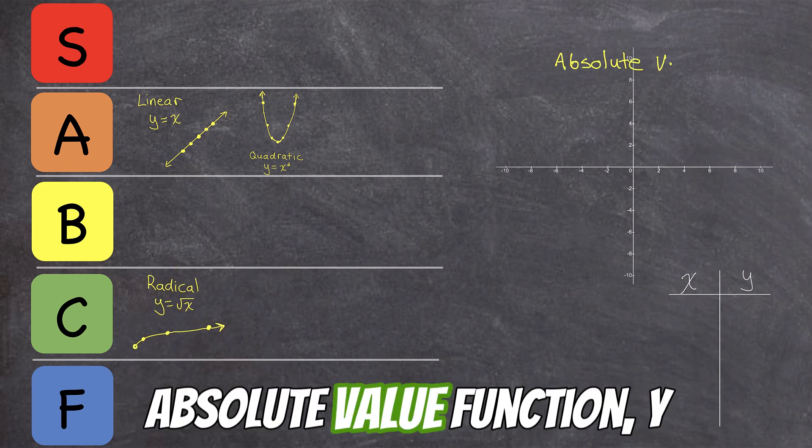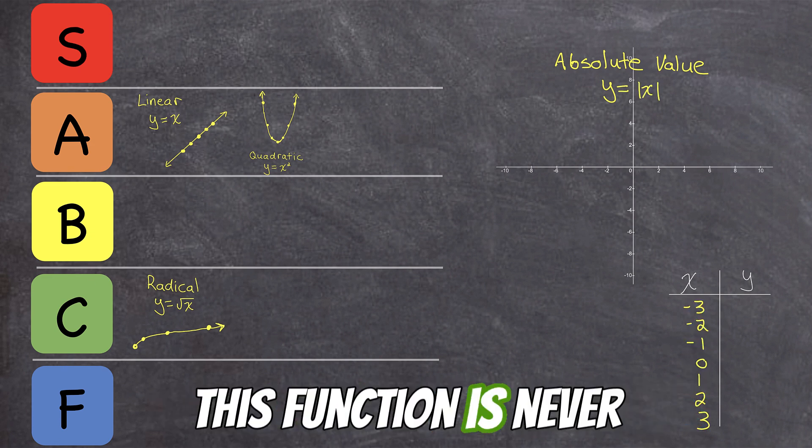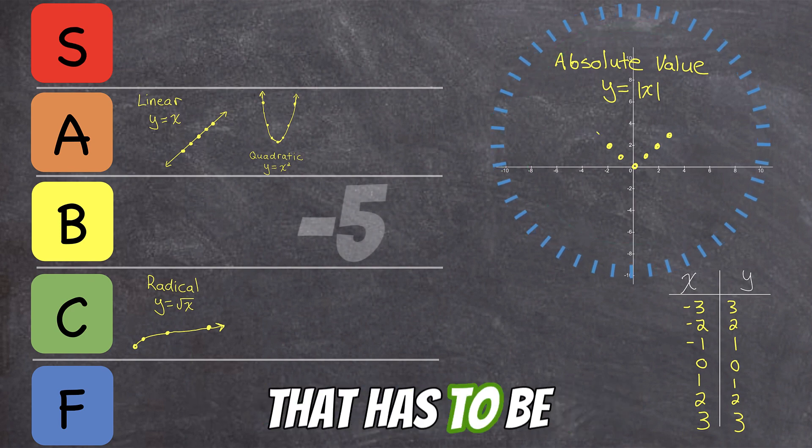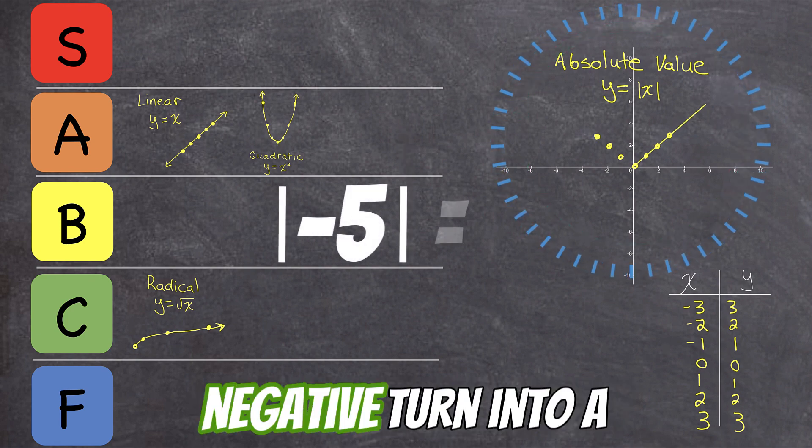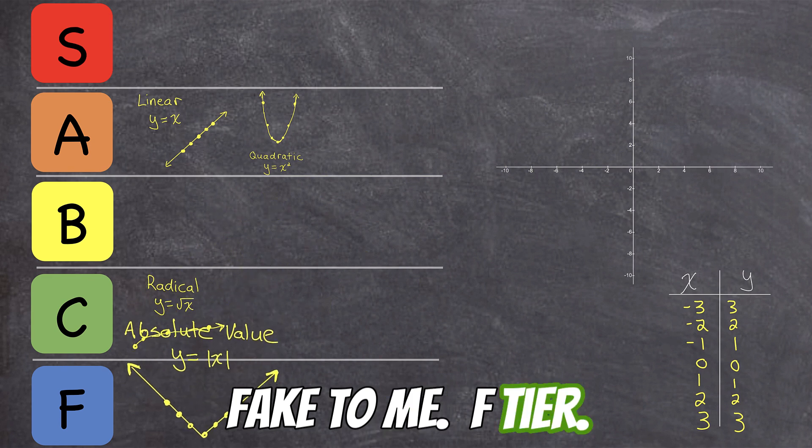Next up, we have the absolute value function, y equals the absolute value of x. This function is never negative, which sounds like a good thing, but that has to be exhausting making everything that is negative turn into a positive. Sounds kind of fake to me. F-tier.